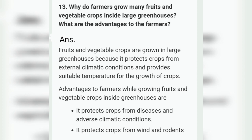Question thirteen: why do farmers grow fruits and vegetable crops inside large greenhouses? Crops are grown in large greenhouses because it protects crops from external climatic conditions and provides a suitable temperature for crop growth. Advantages include: protection from diseases, adverse climatic conditions such as heavy rain and storms, and protection from wind and rodents.